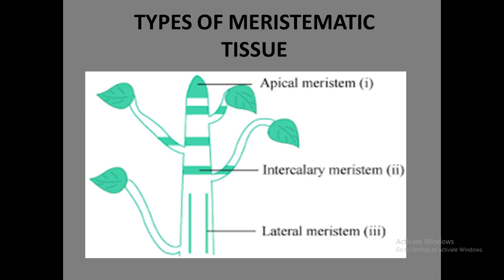The second type is intercalary meristem. It is present at the base of the leaves as well as in the internode region, and also helps with the vertical growth of plants. The third type is lateral meristem, also known as cambium. It is responsible for the lateral or secondary growth of plants — that is, horizontal growth — and helps to increase the girth or width of plants. It is found only in the lateral region.